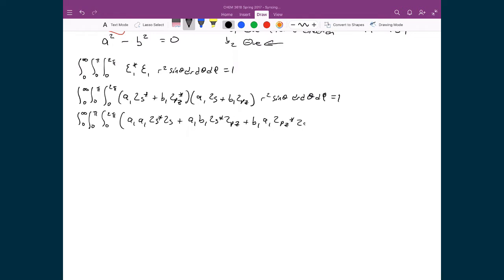2P Z star, 2S, plus B1 B1, 2P Z star, 2P Z, and then that's all times R squared, sine theta, dr, d theta, d phi, and that's equal to 1.